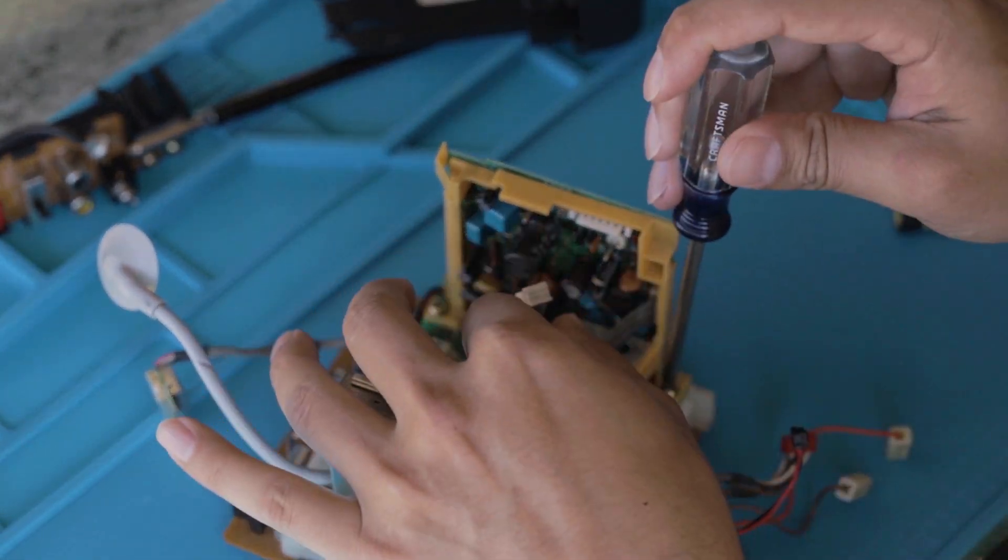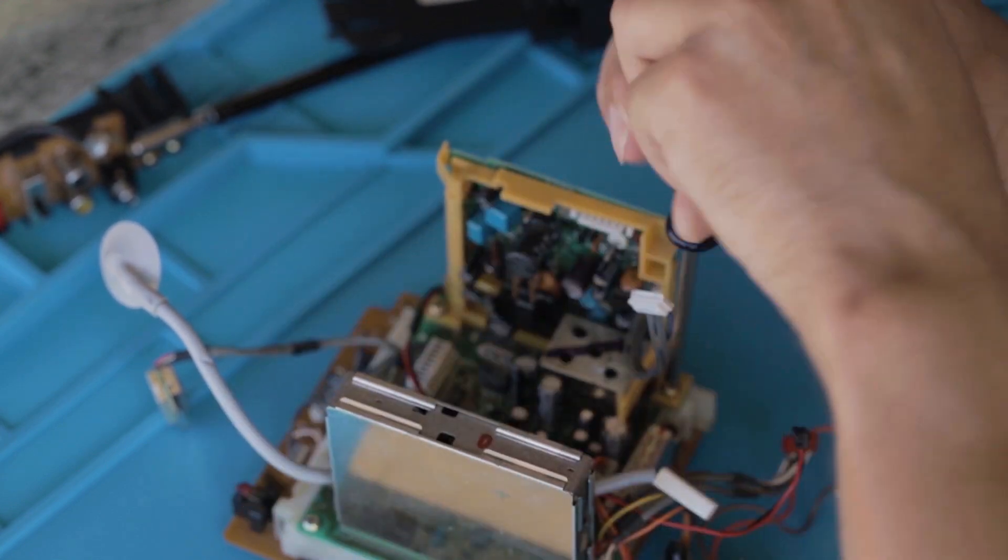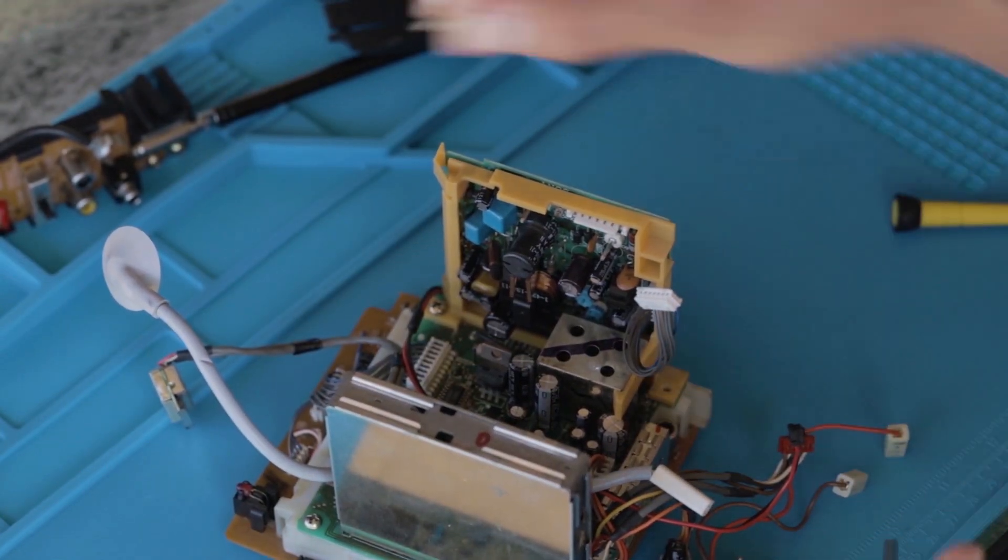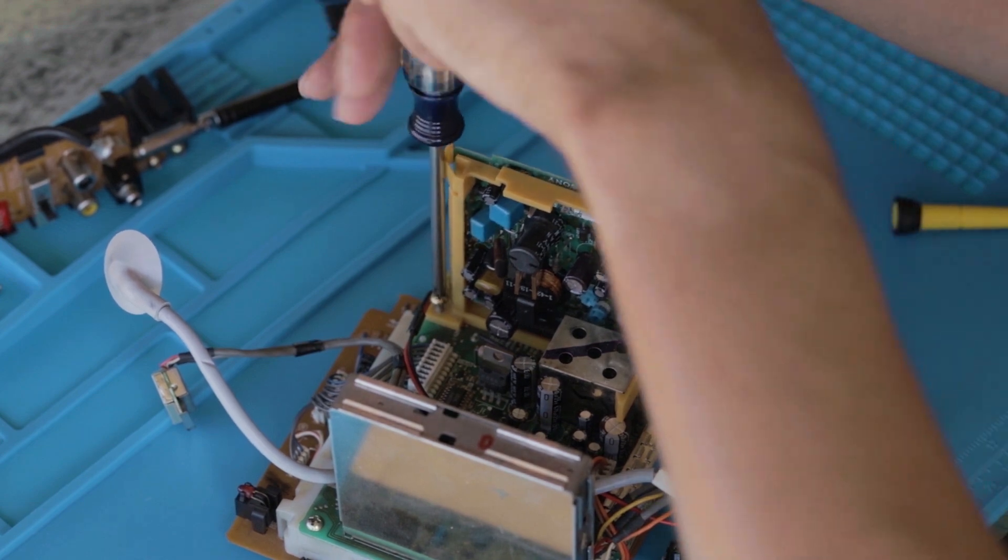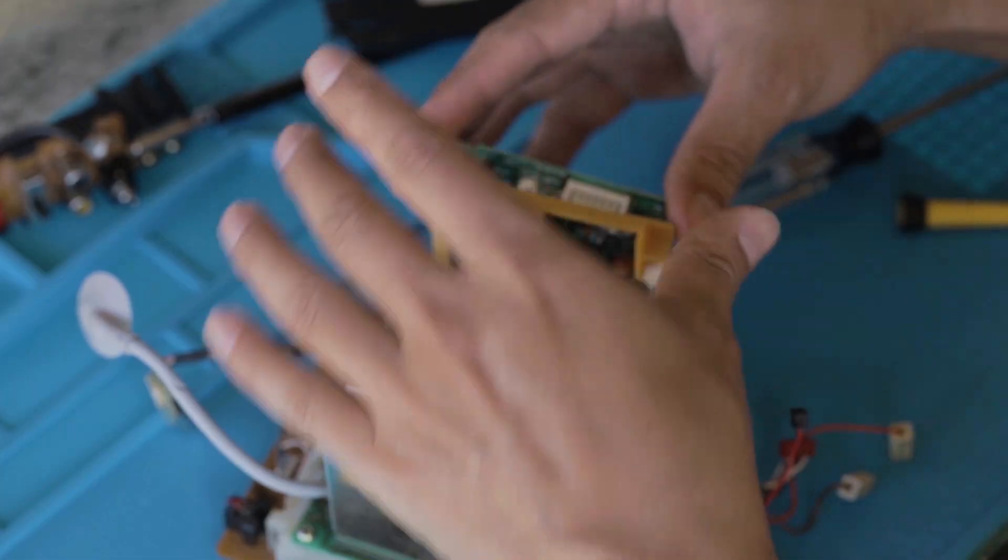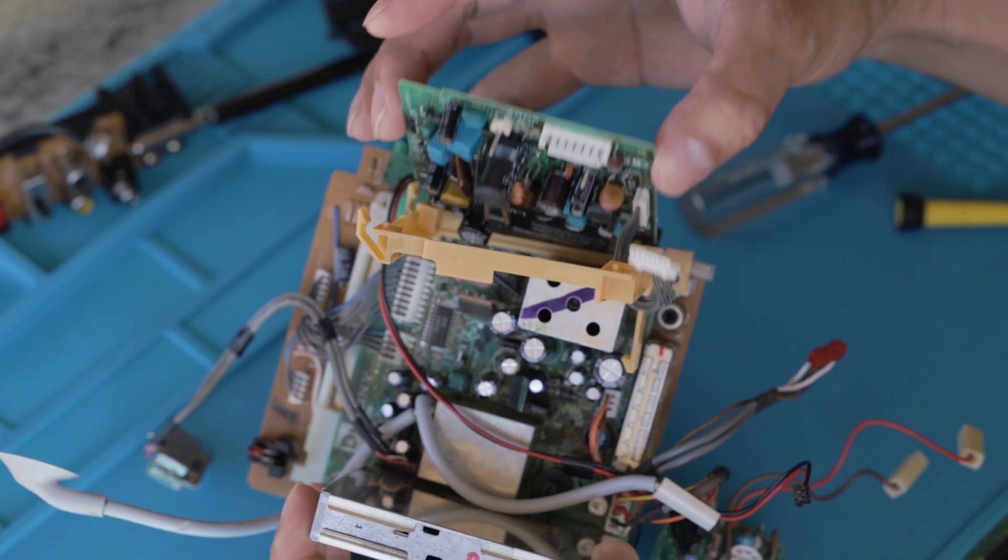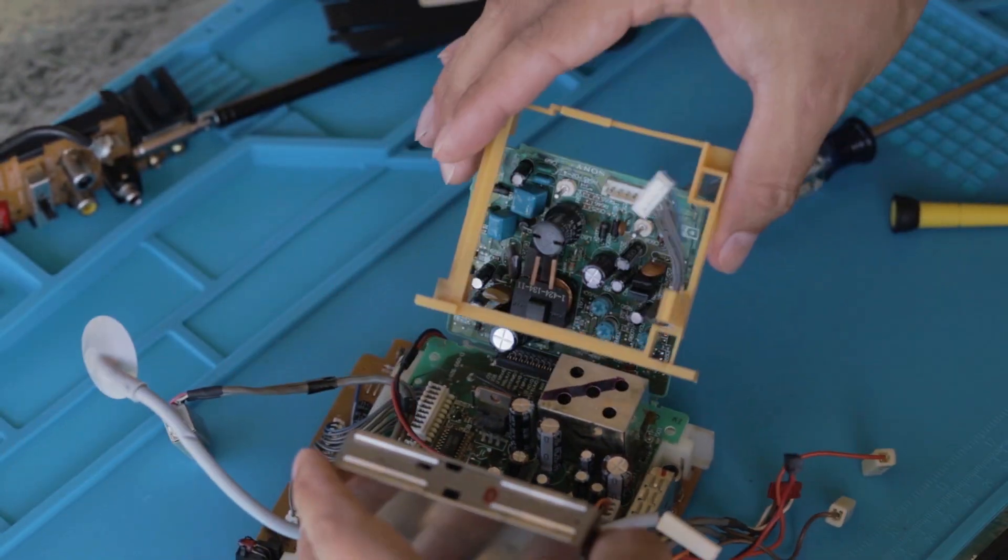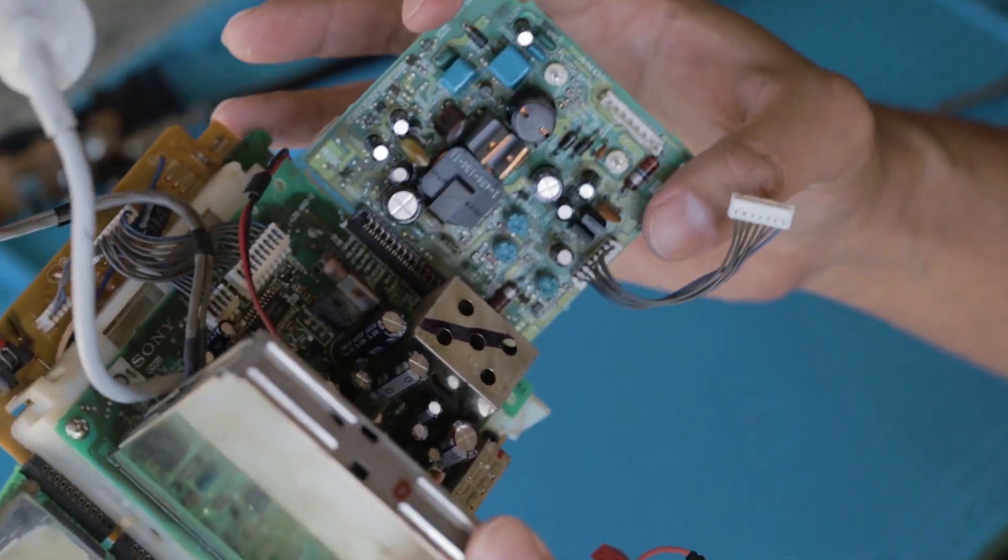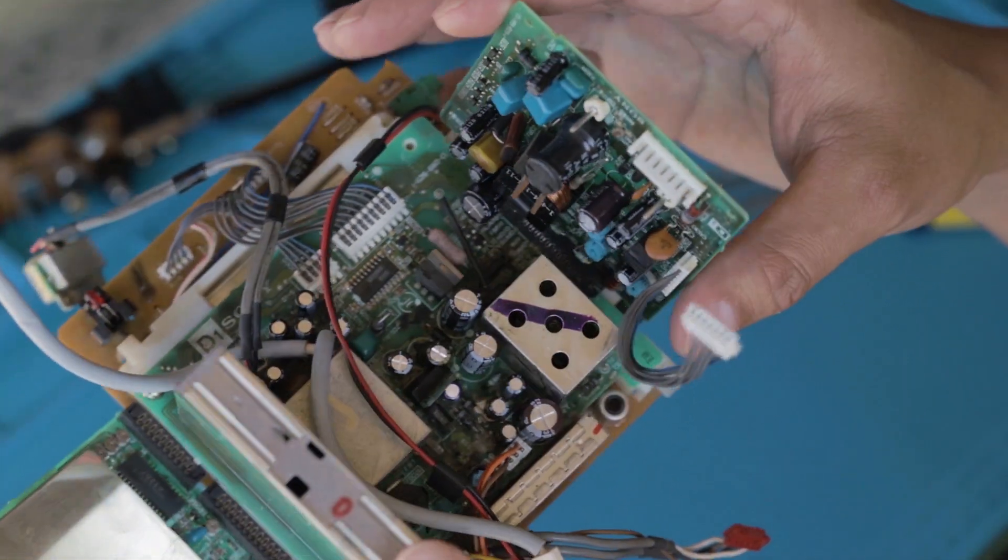The next step will be to remove this plastic brace and then swing out part of the deflection board. And there we go. Deflection board can swing out. Easy access.